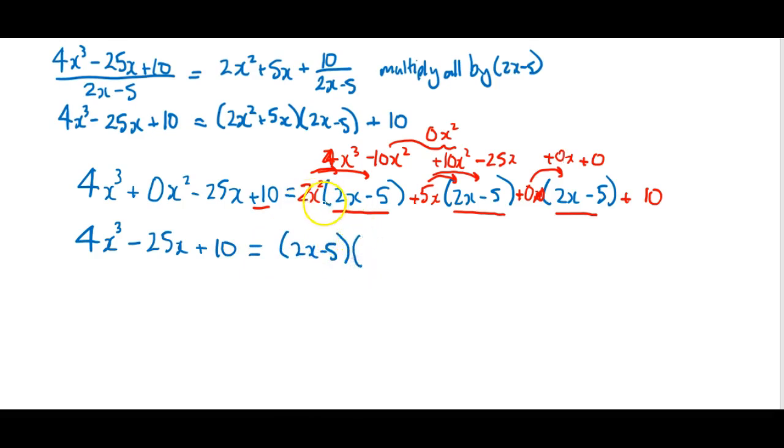What goes in the second bracket? Well it's all these things that are in front of the divisor here. But I don't need the 0 there. So it'll be 2x² + 5x. And don't forget the plus 10 on the end. And you can see that's the same form as before.